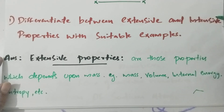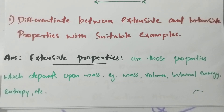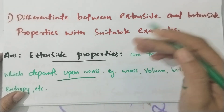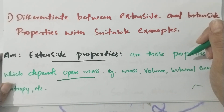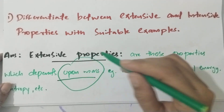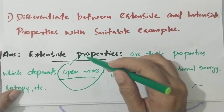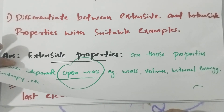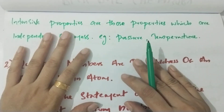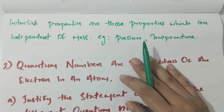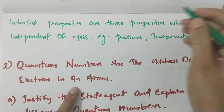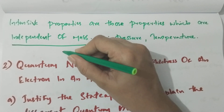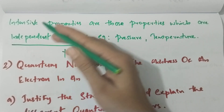Differentiate between extensive and intensive properties. Extensive properties are those which depend on mass — examples include mass, volume, internal energy, and entropy. Intensive properties are those which are independent of mass — they do not depend on mass.